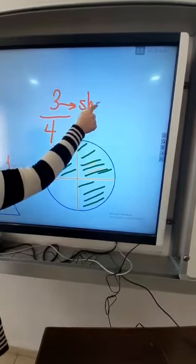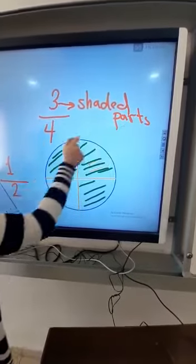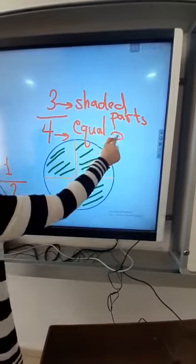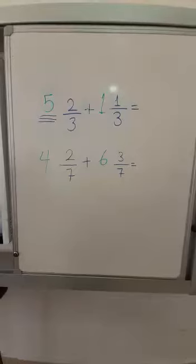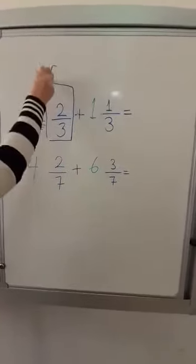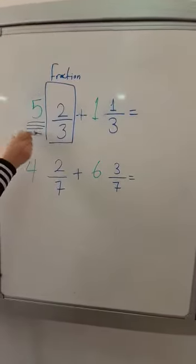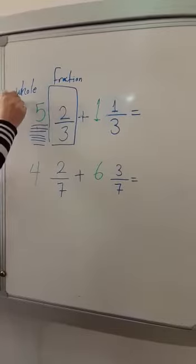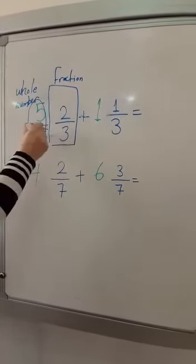So the fraction for the third shape is three out of four. Now, here we have the fraction two out of three, and the number five is a whole number. So here we have a whole number with a fraction.